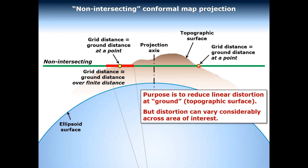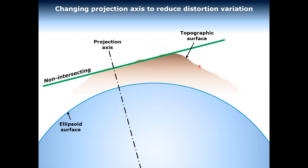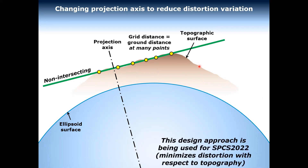What we're going to do for SPCS2022 is essentially design the projection so the developable surface coincides as best as possible with the topographic surface. The grid distance would be nominally the same as the ground distance where that surface cuts the topography. The idea is really pretty simple: just minimize that difference at the ground surface rather than the ellipsoid surface. What this implies is that we'd take every state plane 83 zone and apply a scale factor to get it at ground — but it's actually a bit more specialized than that. We recompute the projection axis location to better coincide with the topography.